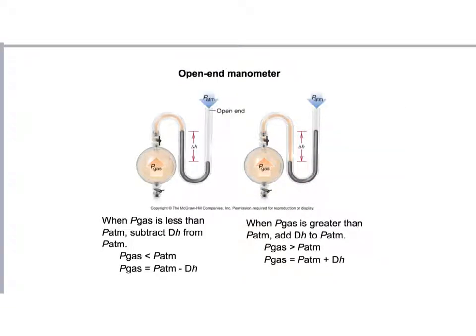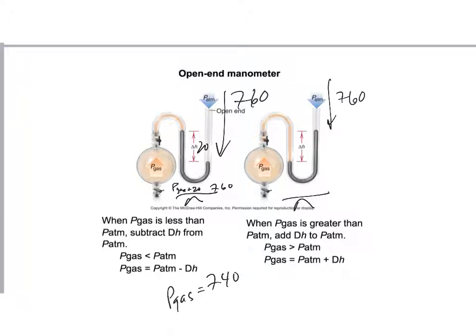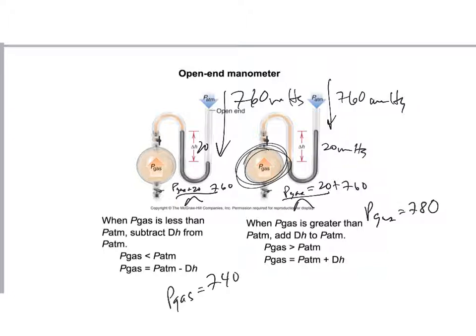Now if I had an open-end manometer, you have to include the atmospheric pressure that day. So if the atmospheric pressure was 760 on this day, you would say that the teeter-totter is the pressure of the gas plus 20 is equal to the 760 that's pushing down. So that would mean that the pressure of the gas on my left-hand picture would be 740. On the other hand, if I had this manometer that's open air to 760 millimeters of mercury, the pressure of the gas is going to be higher because the pressure of the gas is one side of the teeter-totter and the other side is the 20 millimeters of mercury plus the 760 from the atmosphere. So this pressure of the gas is going to be equal to 780.